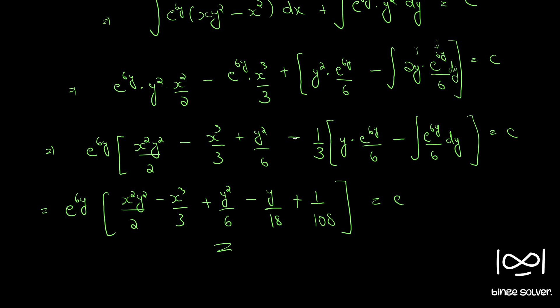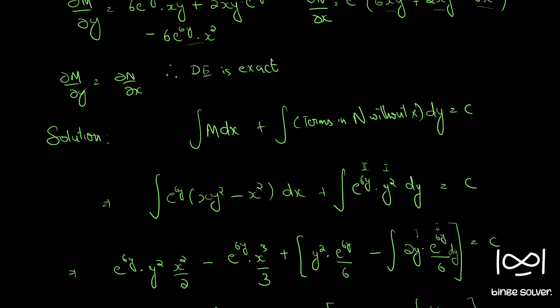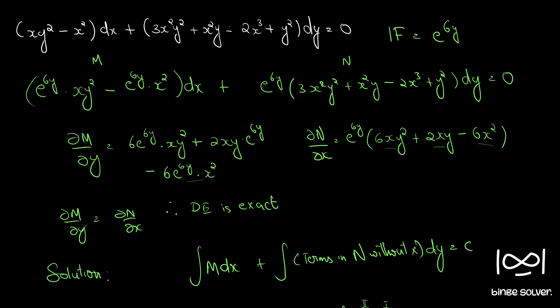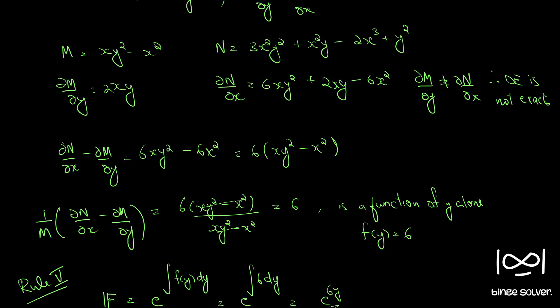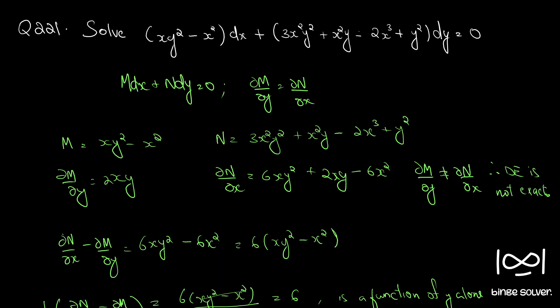After completing the integration by parts and collecting all terms, noting sign changes (minus-minus gives plus), the final answer is e^(6y) times [x²y²/2 - x³/3 + y²/6 - y/18 + 1/108] = C. We obtained our integrating factor e^(6y) using rule 5. This is the solution to question number 221.